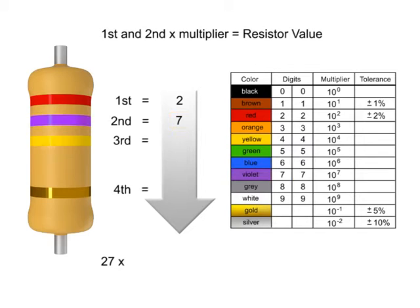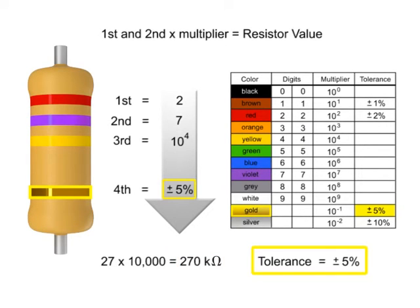The third band is yellow, so we multiply the first two numbers by 10 to the fourth, or 10,000. Thus, the value of this resistor is 270 kilo-ohms with a tolerance of plus or minus 5%.